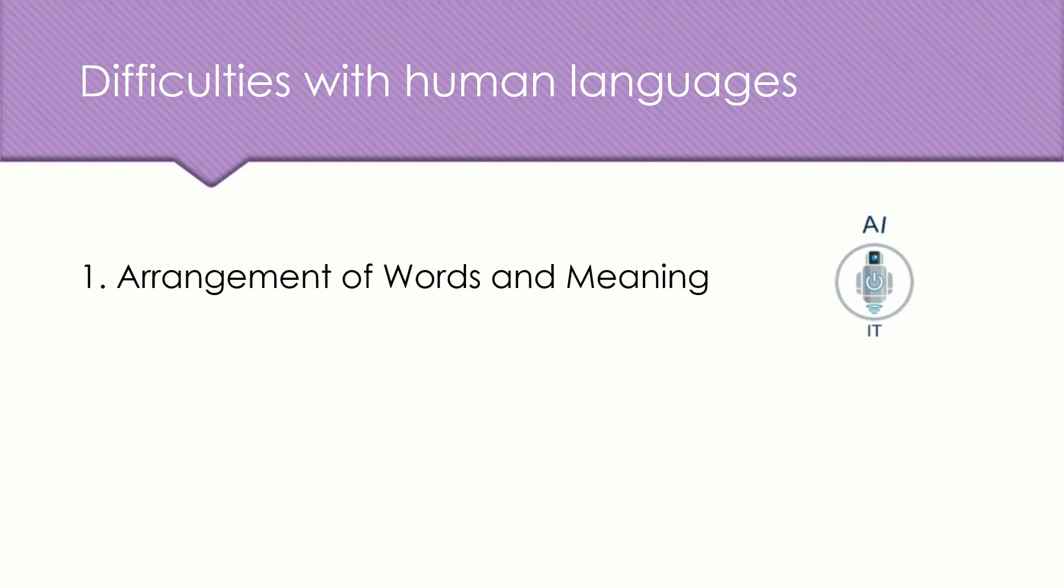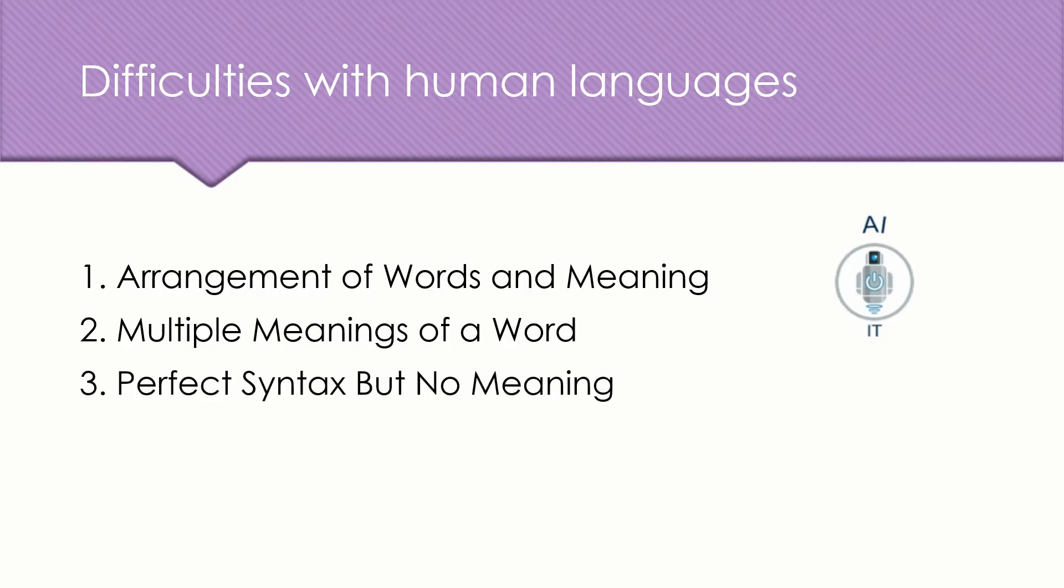Let us look at three of them today. The first one is the arrangement of words and its meaning. The second one is the multiple meanings of a word. And the third one is perfect syntax but no meaning.